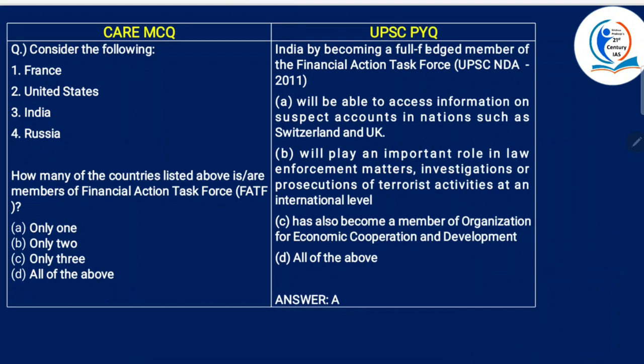Consider the following: how many of the countries listed are members of the Financial Action Task Force? As we saw, P5 countries are there, but Russia has been kicked off so Russia is not a member. India is a member from 2010, not 1989. United States and France, as they are part of P5, are also there — so only three.